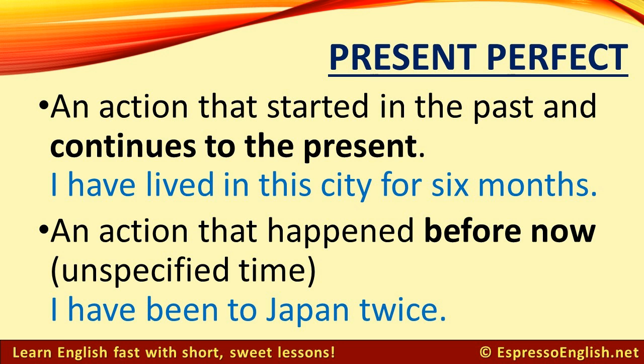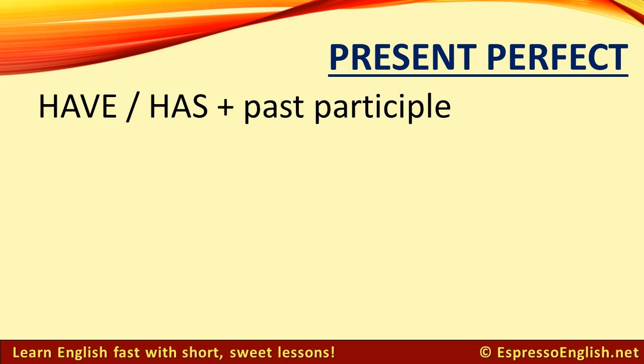We can also use the present perfect for an action that happened before now, when we don't specify the time. For example: "I have been to Japan twice." This happened before now, but I don't say specifically when I traveled there. The form of the present perfect is have or has plus the past participle.